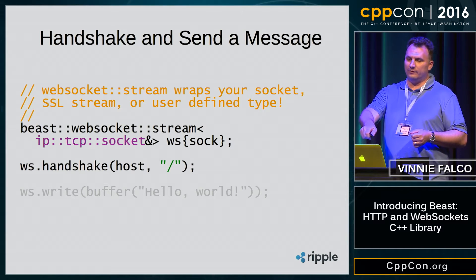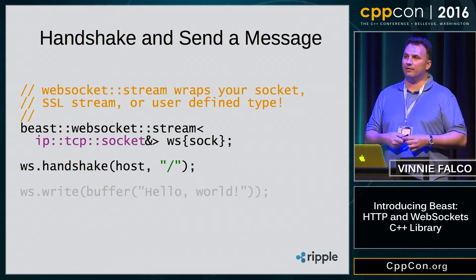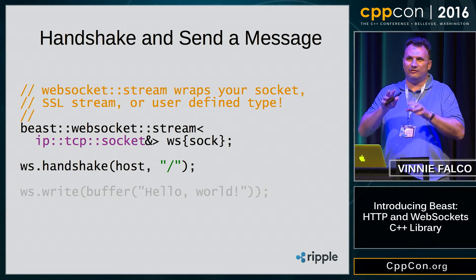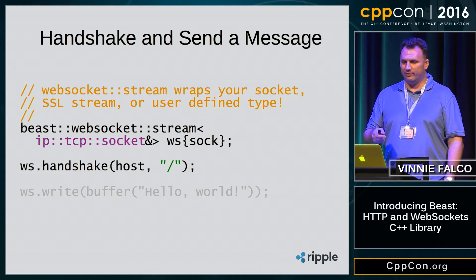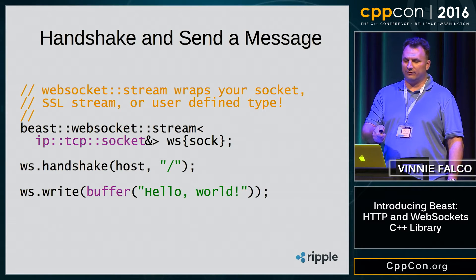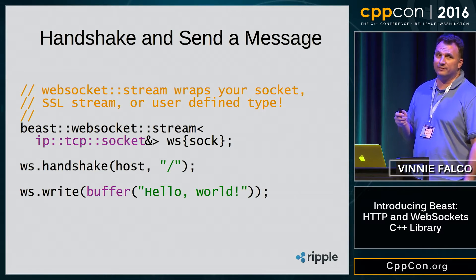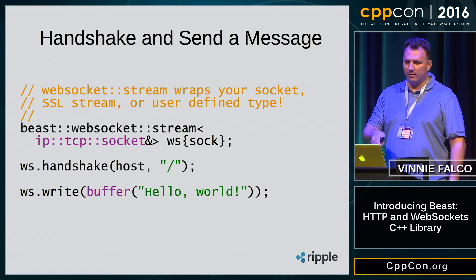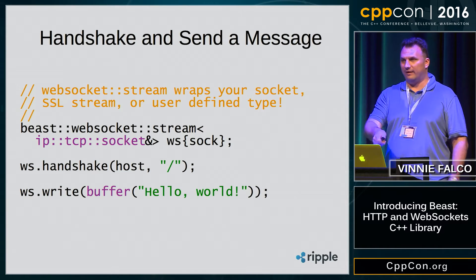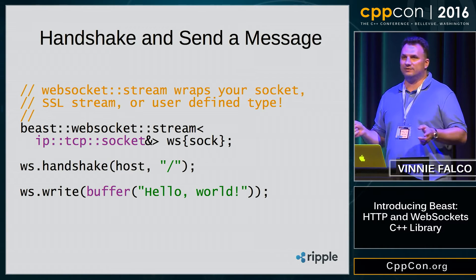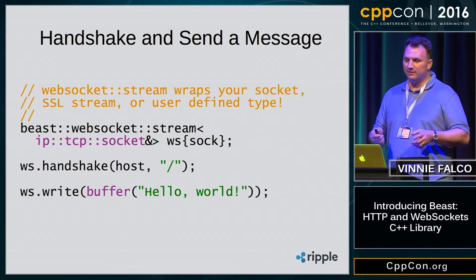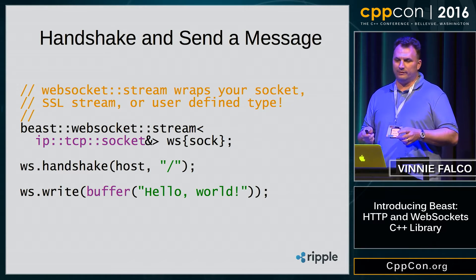In the handshake call, you tell it the host, which becomes the host field in the HTTP headers, and then the URI — that could be your CGI /bin or whatever you're using. So we handshake, and now we write our message. We use ASIO's buffer function, which creates a const buffer sequence from a string. Beast's write function takes any const buffer sequence that meets the requirements, so you can use all the things familiar from ASIO.